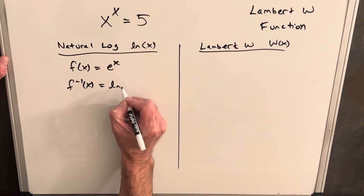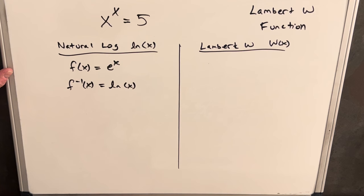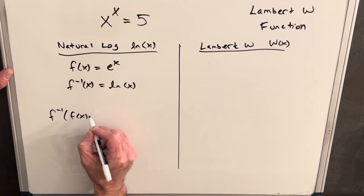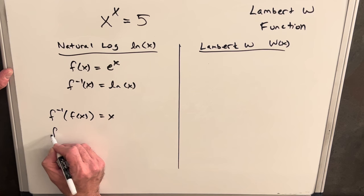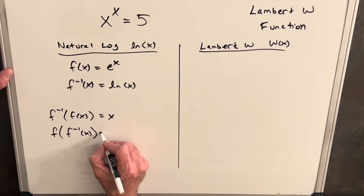We can show that these are inverses pretty easily because inverses have this property: if we take the inverse of the original function we just get back the input x, and then we can do it the other way as well. We can say if we have the function of the inverse we just get back the x again.